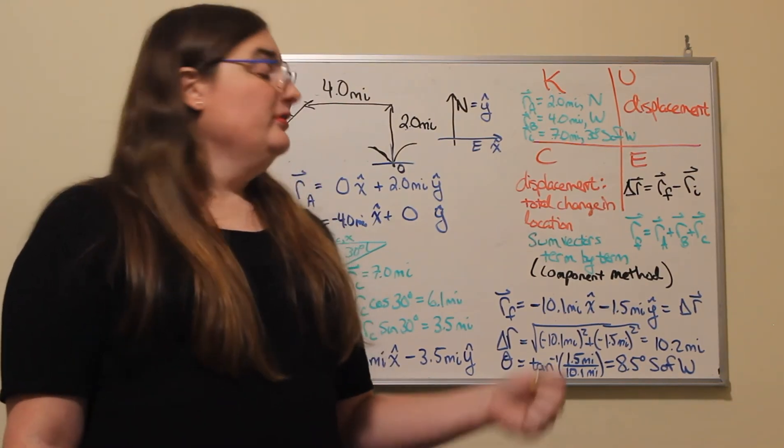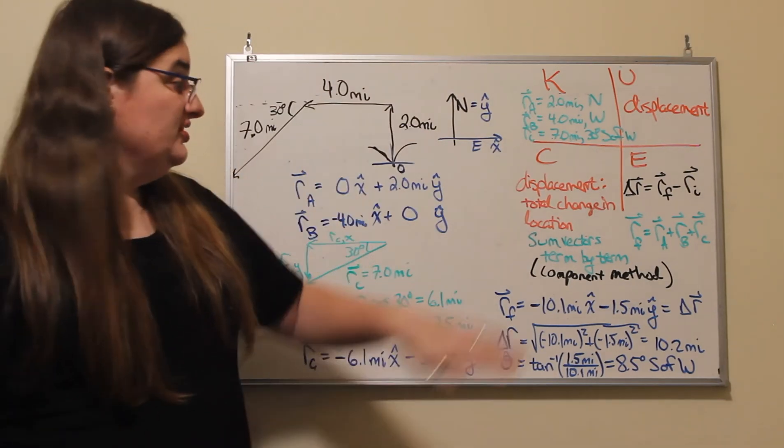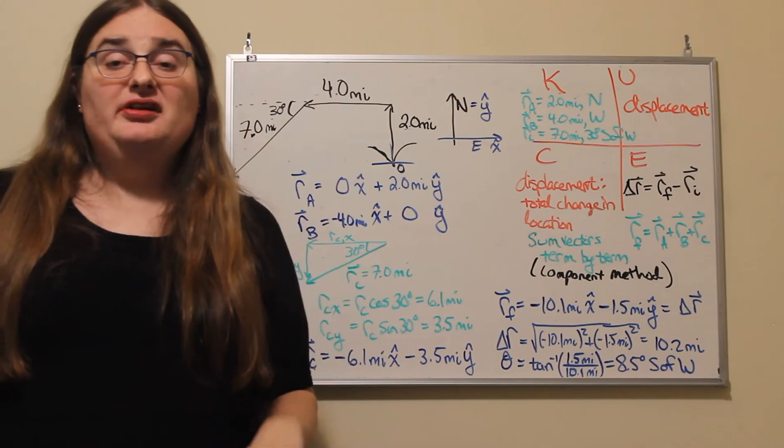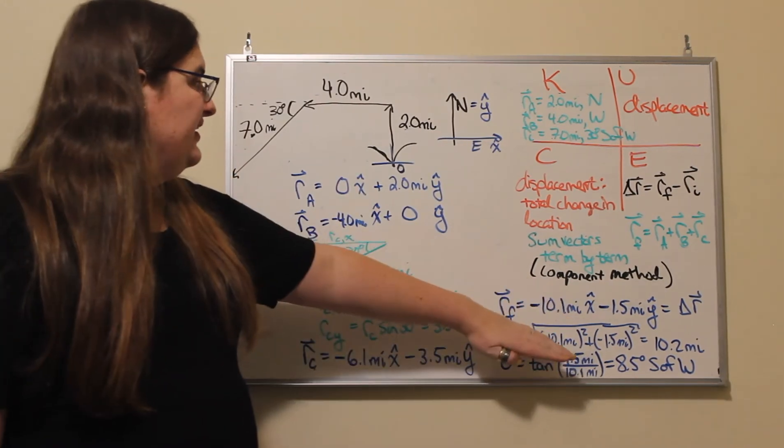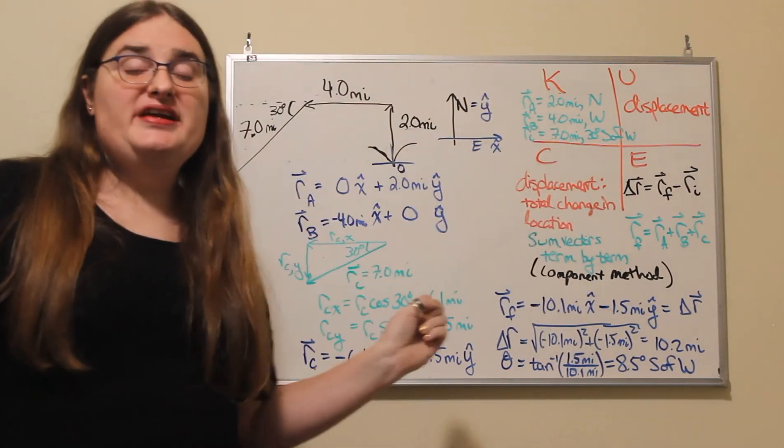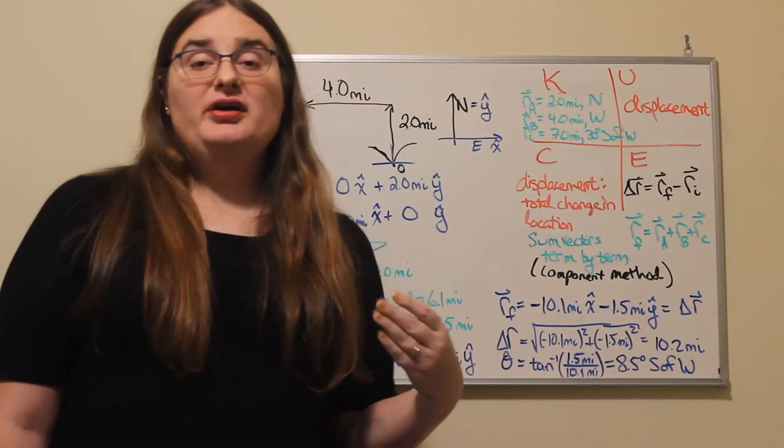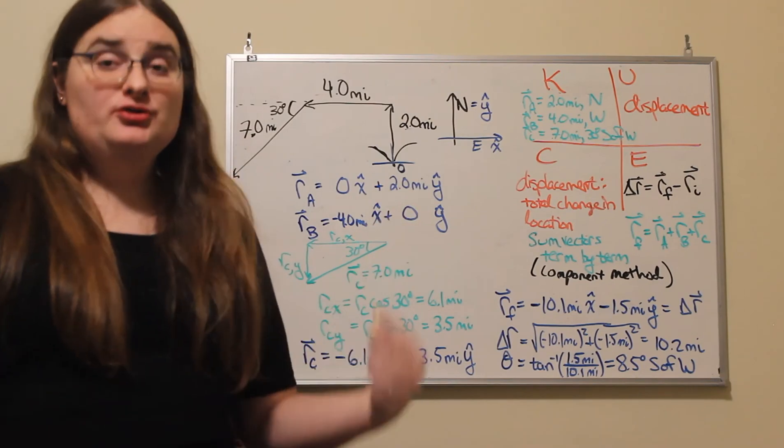Now, if you just have that angle and you want to start east and rotate around counterclockwise until you get to the right direction, well then you'd have to say, okay, I would have to add 180 degrees to that result, so it would really be 188.5 degrees from due east.